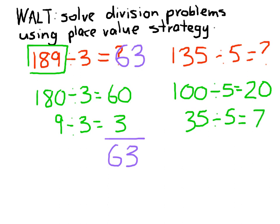7 times 5 is 35. So our answer is going to be the sum of 20 and 7, which is 27. So 135 divided by 5 is 27.